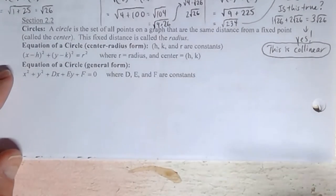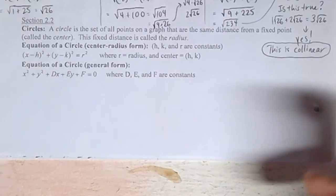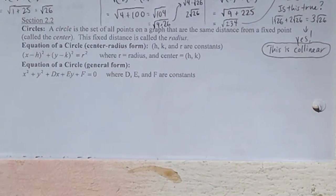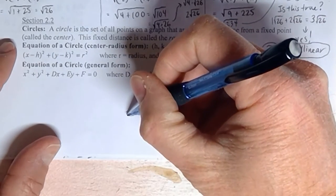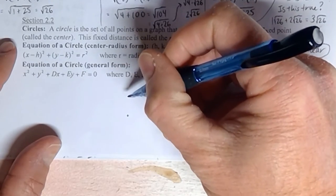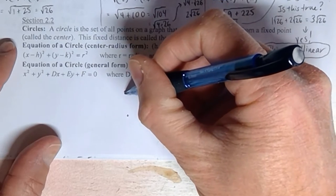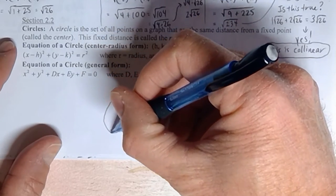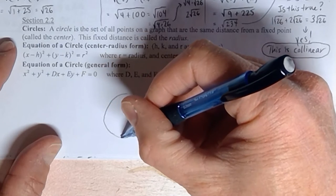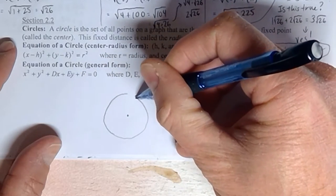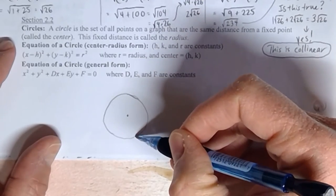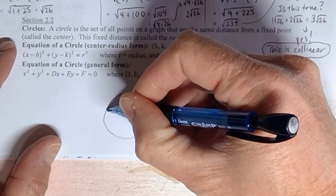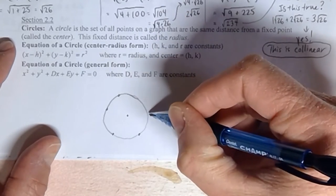Just to start off real basic here — what is a circle? We all know it's round, of course, but what else do we know? A circle has a center. What makes it different from other round objects is that every single point on a circle — and this is not a perfect circle I'm drawing — every single point is the same distance away, no matter which point you pick.